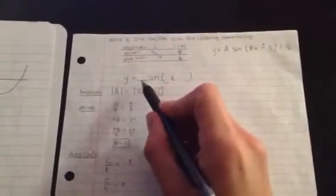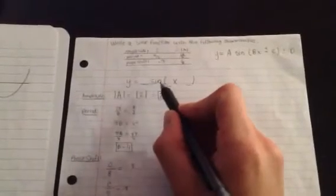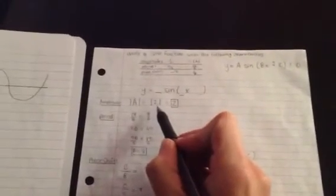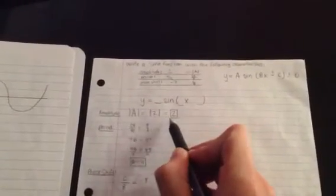So our equation is going to look something like this: an A right here, a B right here, and a plus or minus the C over here. So we established that the absolute value of 2 is just 2. So that's where that one would go, right there.